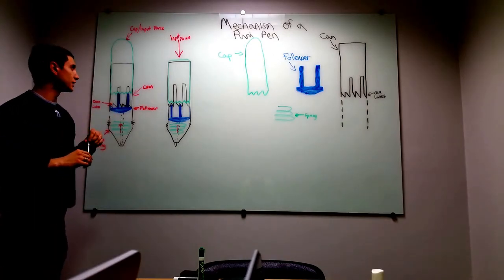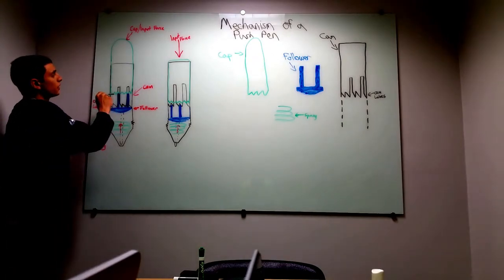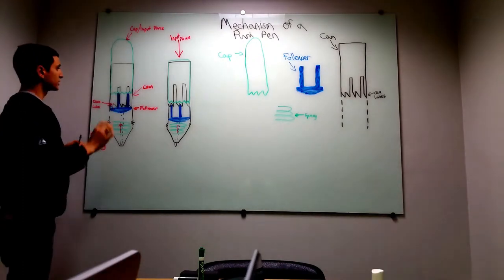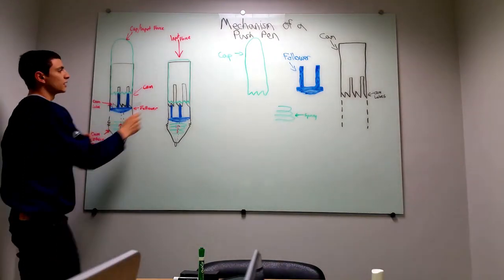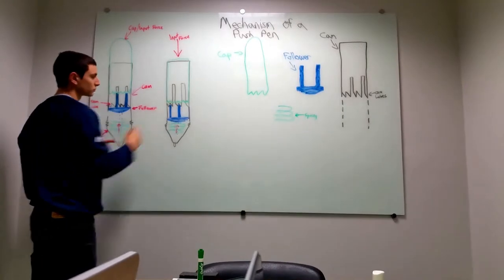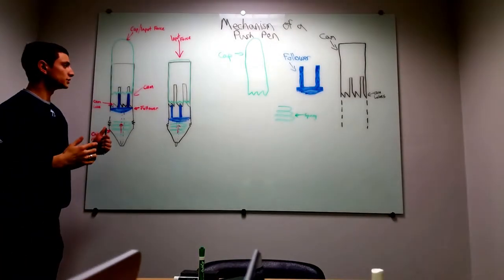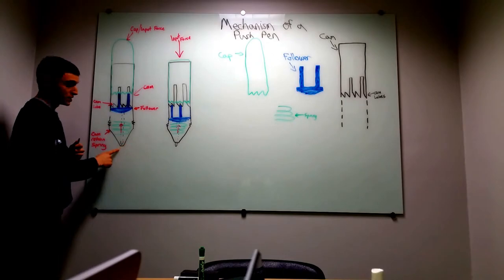One important aspect of the design is the teeth on the cap. They are the same spacing as the width of the lobes, which allows for easier transition from out to in.